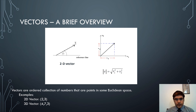The magnitude of a vector is the square root of the sum of squares of its components in each axis. For example, the magnitude of V is equal to the square root of V1 squared plus V2 squared, where V is a 2D vector, V1 is the x part and V2 is the y part.